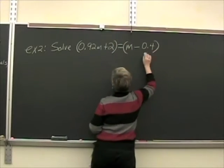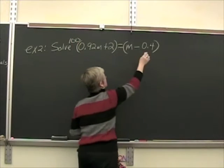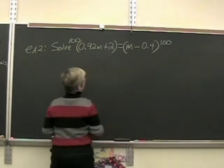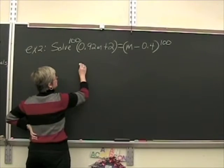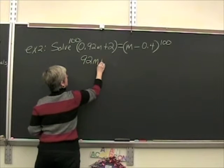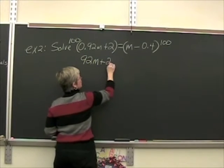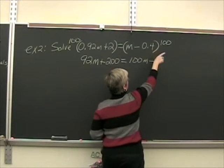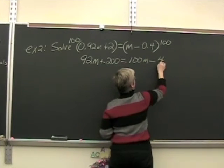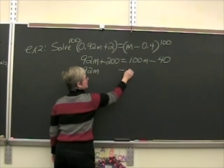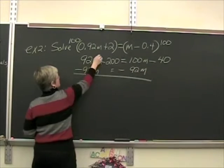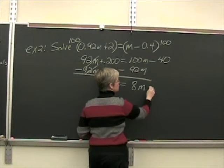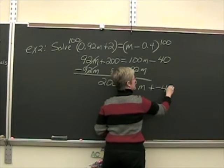I'll just put some parentheses up here, and I will indicate that I'm multiplying both sides of the equation by 100. 100 times 0.92M is going to give me 92M, and then 100 times 2 is 200. Then 100 times M is 100M, and then 100 times 4 tenths would be 40. And then 100 times 2 is 200.